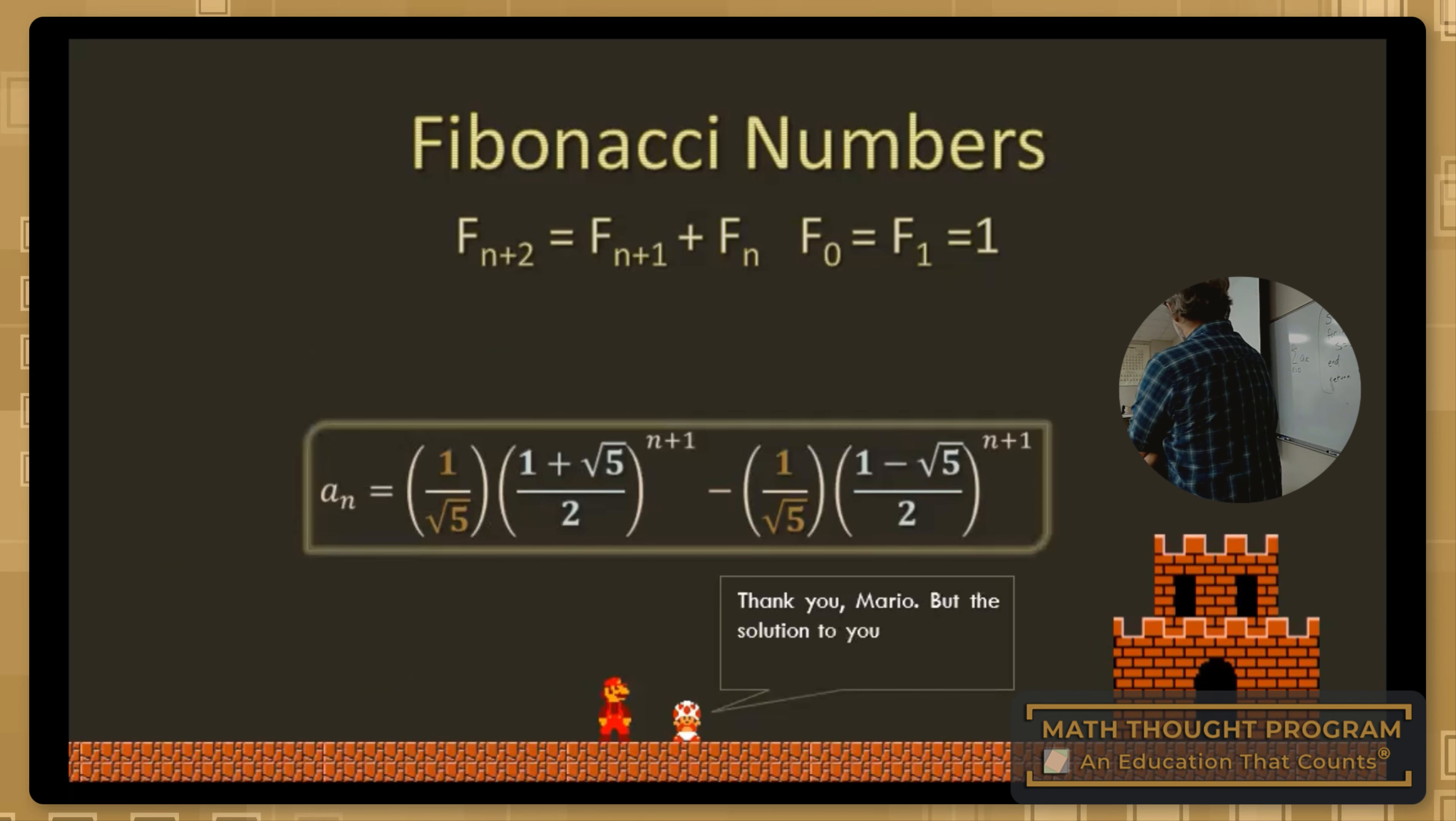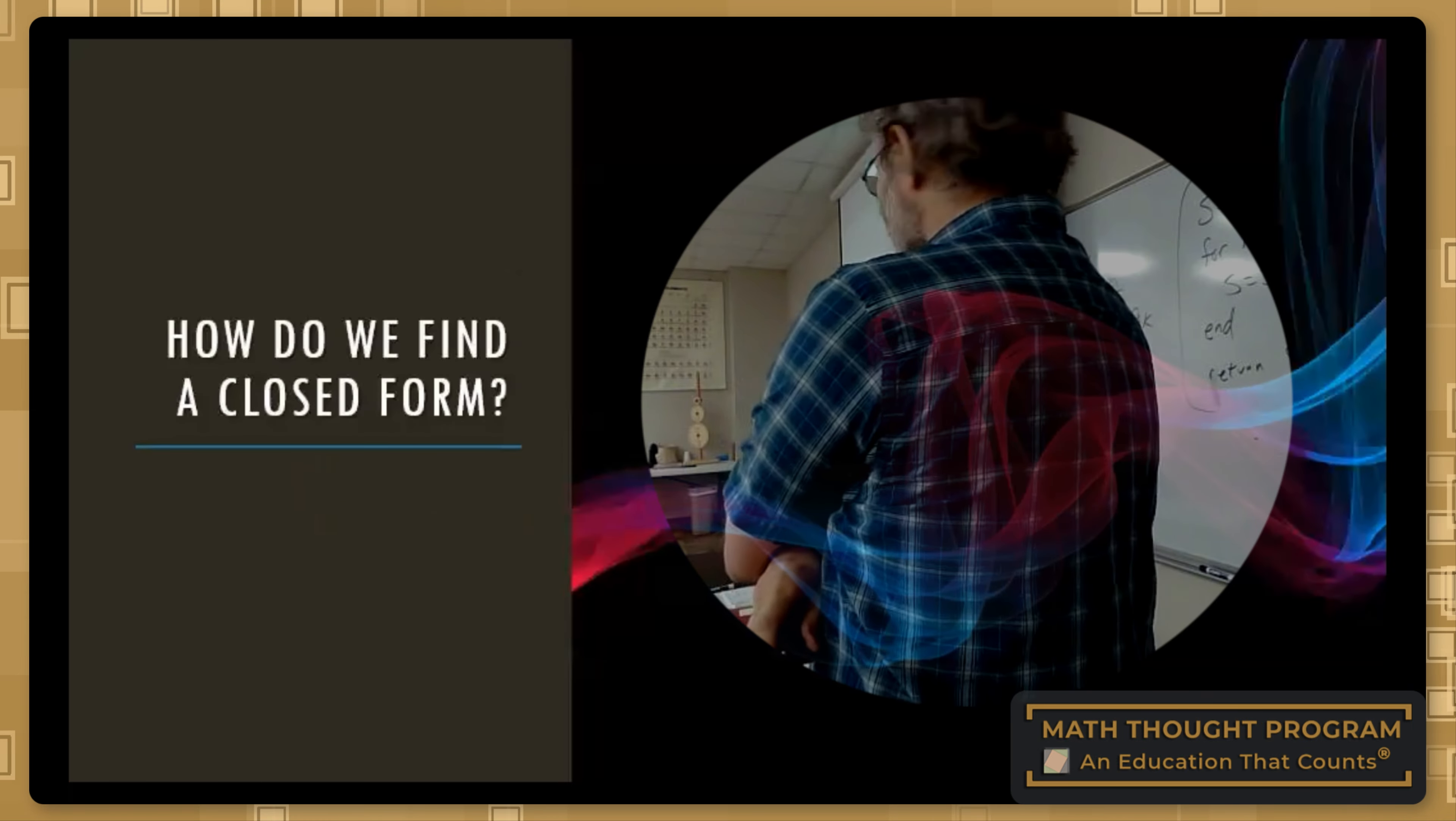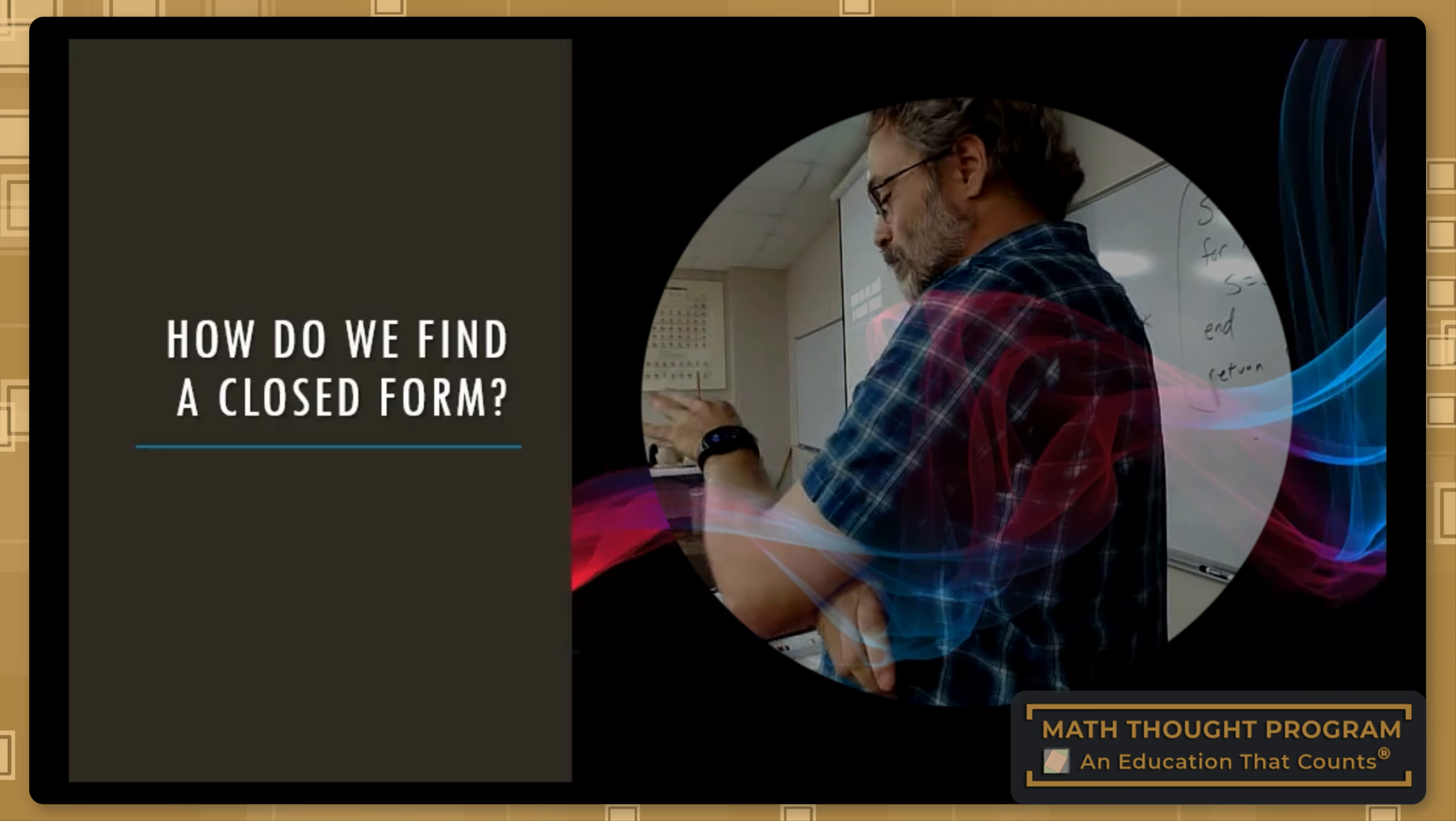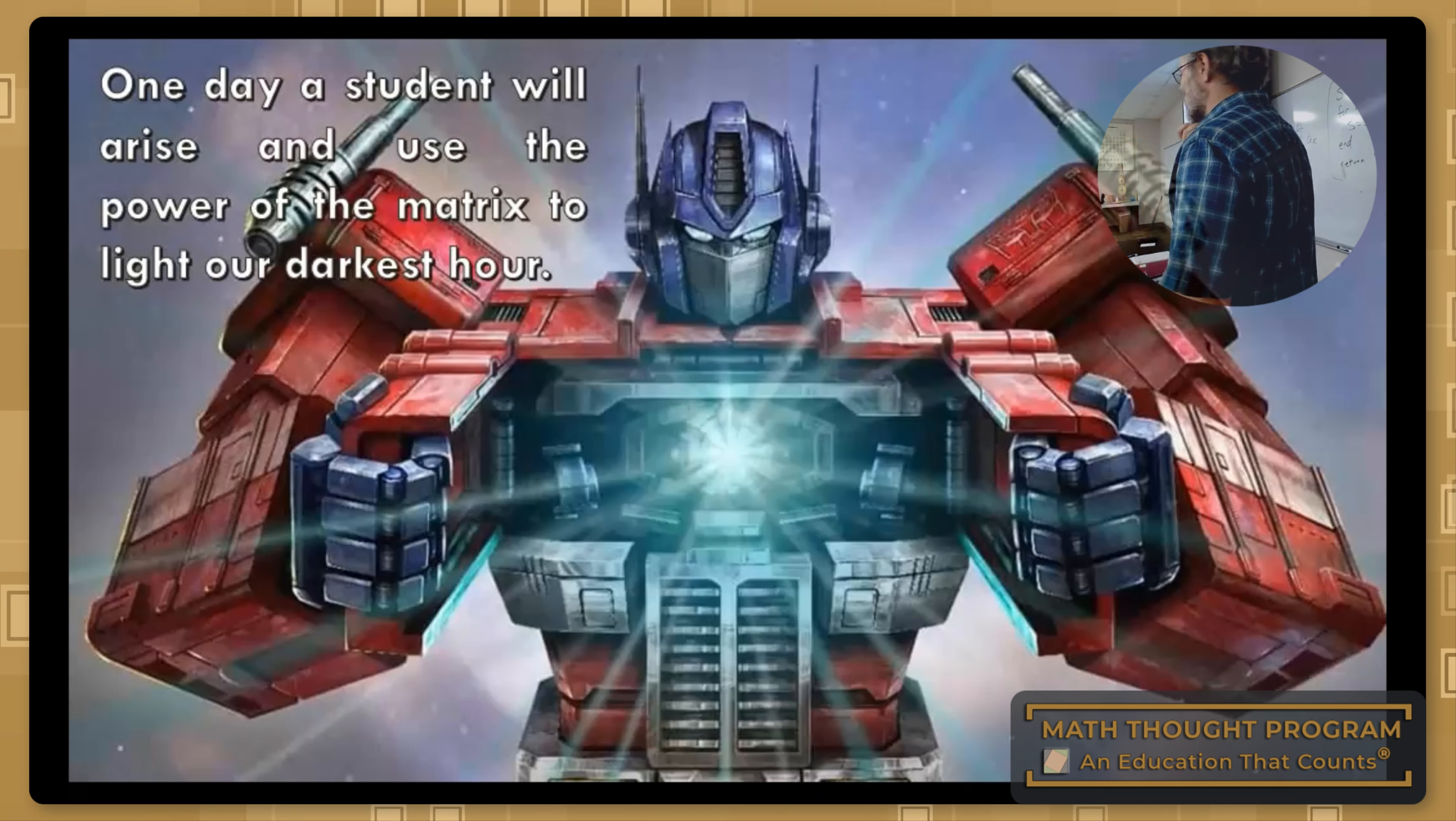And that's exciting. How do we find the closed form? It's all based upon that structure. And the reason why you get that n, or the n-squared, it's all based upon the Jordan canonical form as you power things up. One day, a student will rise and use the power of the matrix to light our darkest hour. The power of matrices, linear algebra, kind of sometimes is kind of like underrated. That's a prime example.